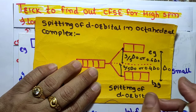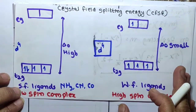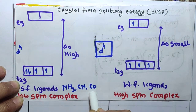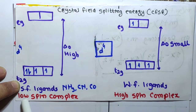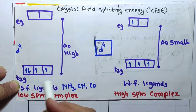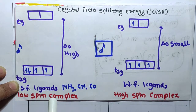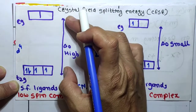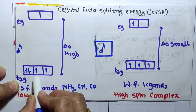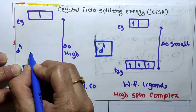Delta O depends on the nature of the ligands. There are two types of ligands: strong field ligands and weak field ligands. Strong field ligands include NH3, CN, and CO, and these make the complex a low spin complex. With strong field ligands, pairing occurs and electrons remain in the t2g level because delta O is large.